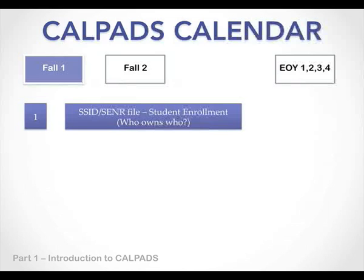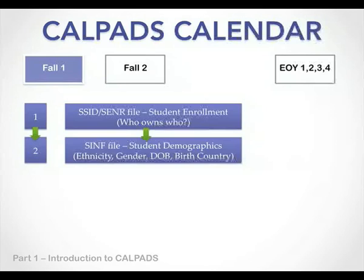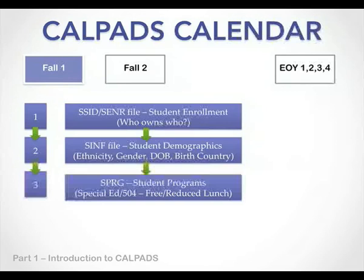The process of certification really boils down to this. You're required to upload three or four files of student information. The first file is the SSID or SENR enrollment file, which basically determines who owns who and whether every student has their own unique SSID number. The next file is a student information file, which has more student demographic information. The third file is a student program file. There's also the student ELA status file — the English learner status file — so you need three or four files to upload for Fall 1.